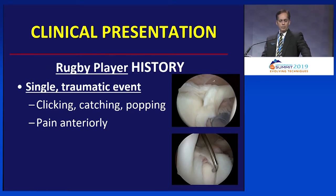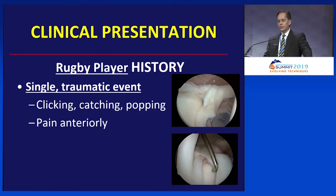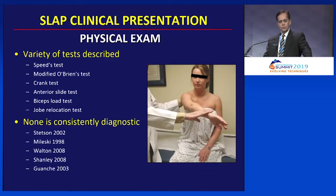This rugby player's history is acute injury, clicking, catching, and popping — very likely symptomatology — and pain, probably anteriorly. We know that SLAPs are difficult to diagnose. There are a variety of tests that have been described, but none is consistently diagnostic.